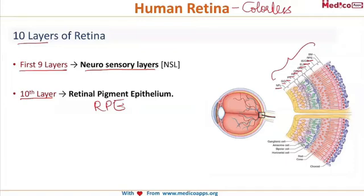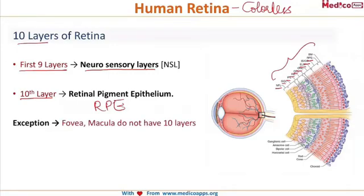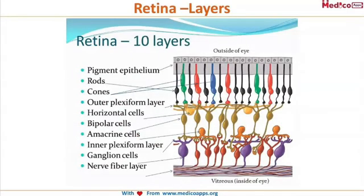You don't have to remember all these layers in detail — that was just for clarification. However, there is one important exception: the fovea and the macula do not have all 10 layers. These 10 layers apply to the retina in general, with the exception of the fovea and macula.